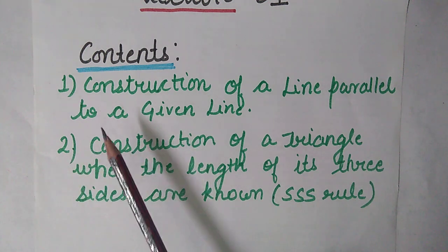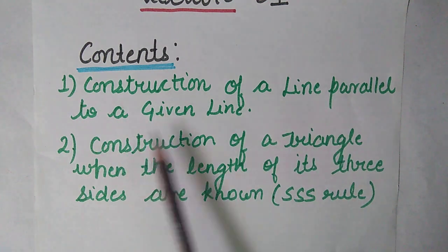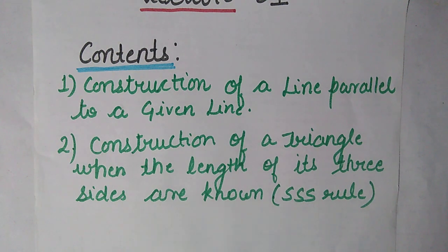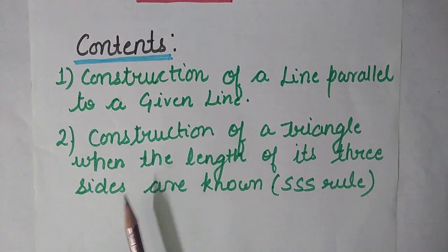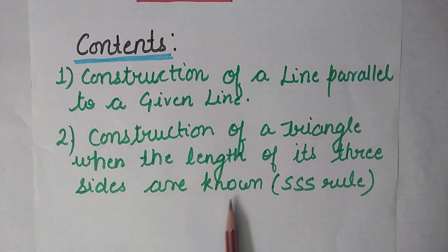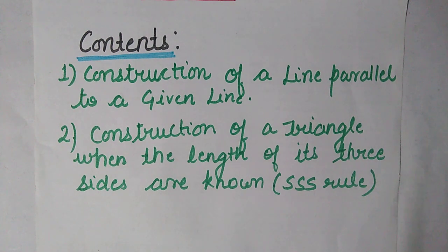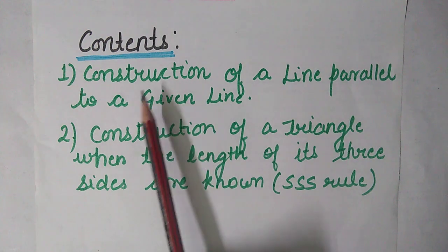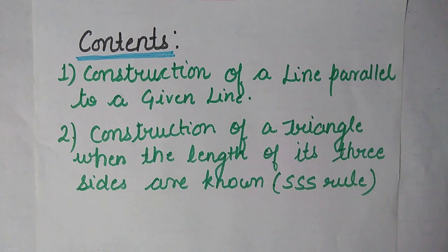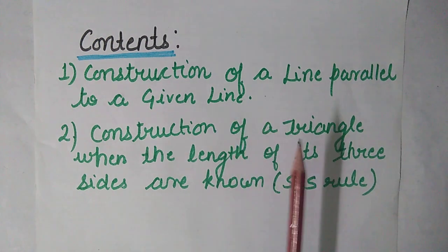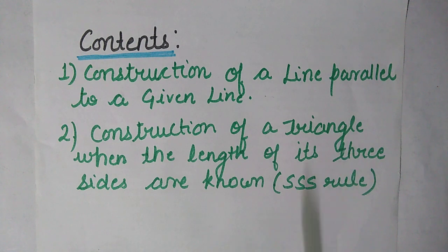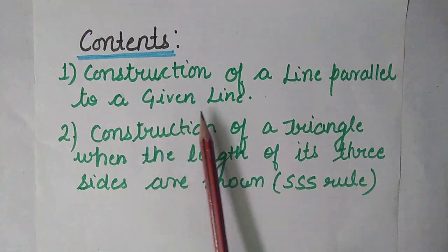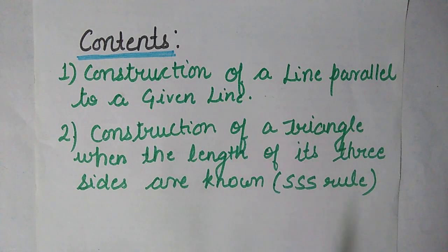In this lecture we will discuss construction of a line parallel to a given line — how to construct a line which is parallel to a given line — and after that we will learn construction of a triangle when the length of its three sides are known. I will explain this with the questions from exercise 10.1, which is completely related to this topic.